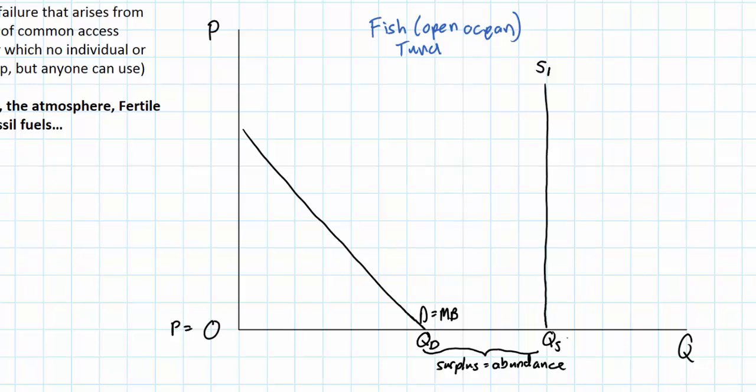But what happens as populations grow? Let's show a scenario where decades go by. Demand grows as the demand for protein to feed the growing world population increases. So we will see the demand for tuna eventually shift outwards. Call this demand curve D1. This might be decades later, maybe a century later. Demand has grown due to growing populations.